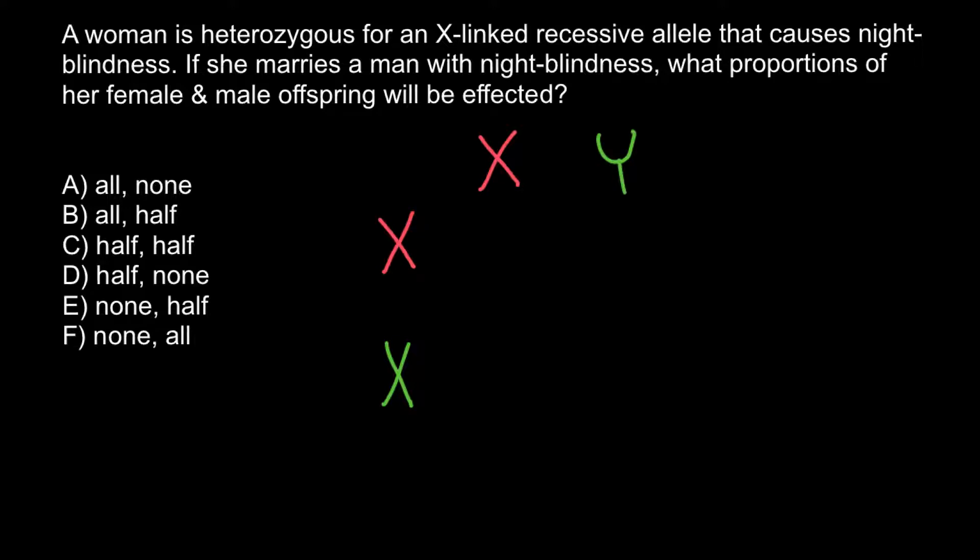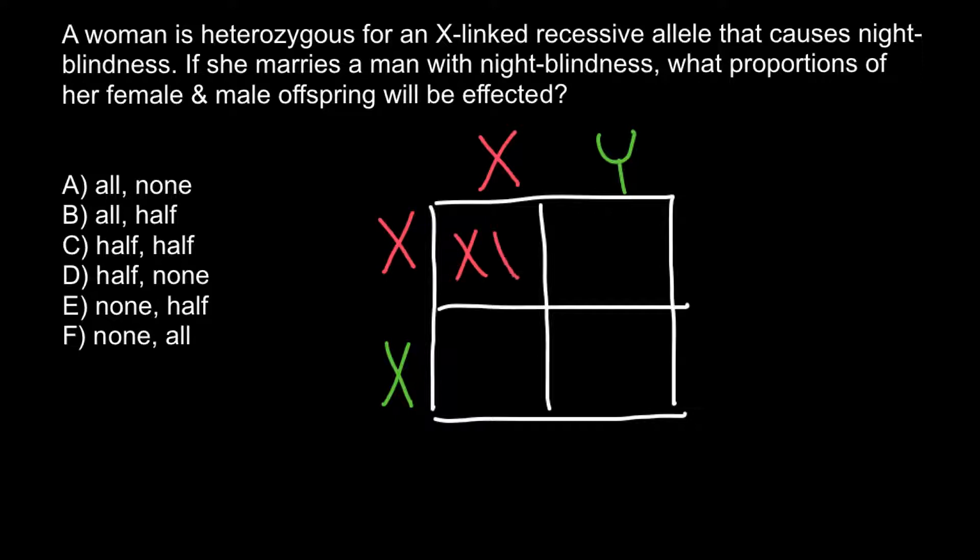Now we build a Punnett square to find the genotypes and phenotypes of the progeny. The combinations are: defective X with defective X, defective X with normal Y, normal X with defective X, and normal X with normal Y.